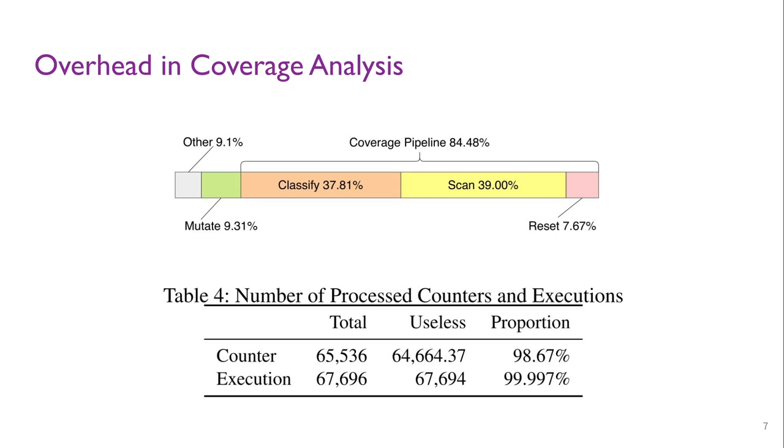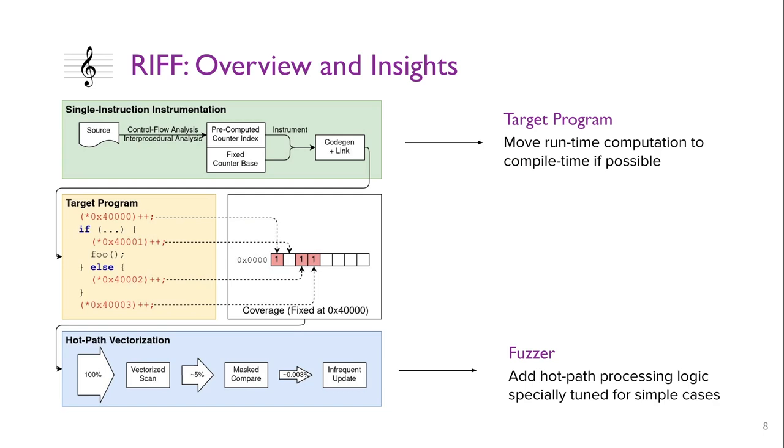As the second row shows, although 99.997% of the inputs did not trigger any new program behavior, AFL still performed many computations. The first pass converted the coverage to a bitmap, and the second pass re-read it to compare with the database of known program states.